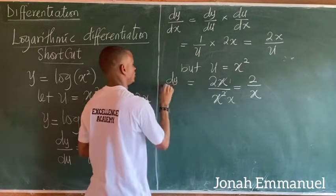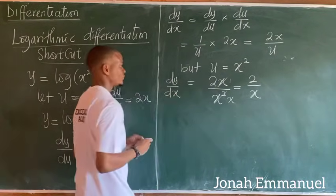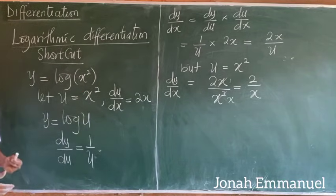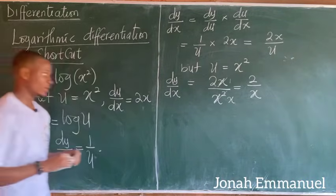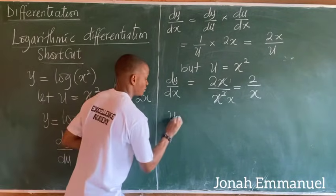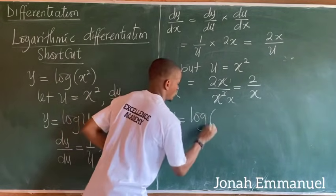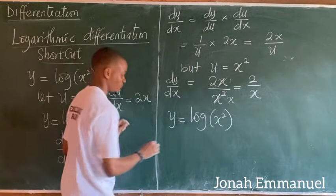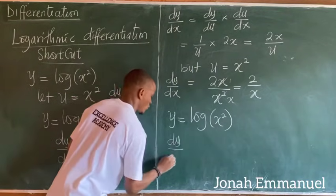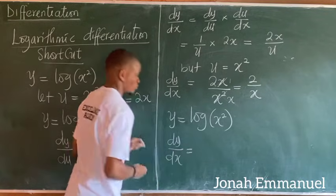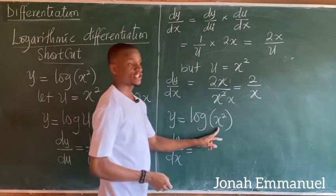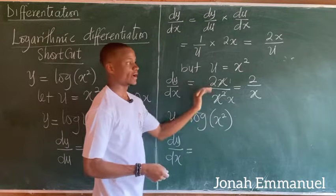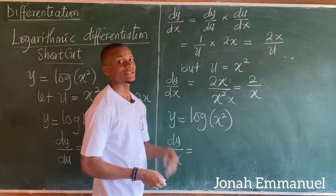This is the value of dy over dx. Now using the shortcut: if y equals log x squared, dy over dx is found by differentiating the term in the brackets and keeping it as the numerator, all over the same term repeated as the denominator.